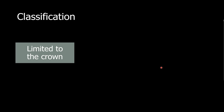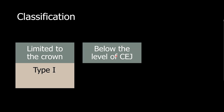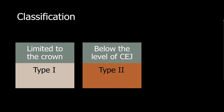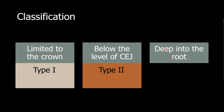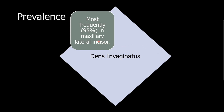With that depth, we can classify dens in dente or dens invaginatus into three different types. If the invagination is limited to the crown, we classify this as type 1. If the invagination is below the level of the CEJ, this will be type 2. And if the invagination is deep into the root, it will be classified as type 3.